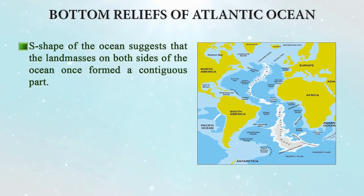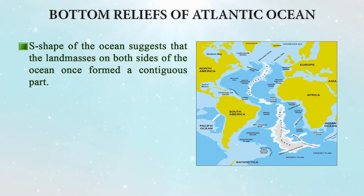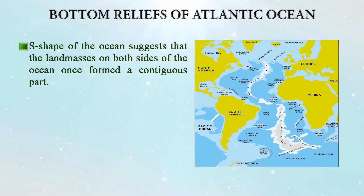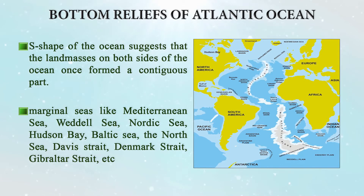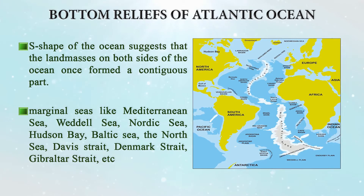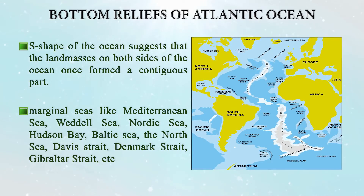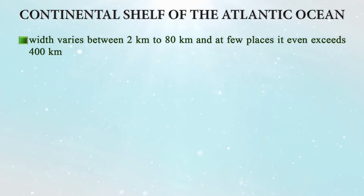The famous jigsaw fit of Wegener shows that the continents on the left of the Atlantic Ocean roughly fit into the eastern part. There are several marginal seas in the Atlantic Ocean like the Mediterranean Sea, Weddell Sea, Nordic Sea, Hudson Bay, and Davis Strait. Coming on to the continental shelf of the Atlantic Ocean, its width varies between 2 kilometers to 80 kilometers, and at a few places it even exceeds 400 kilometers.